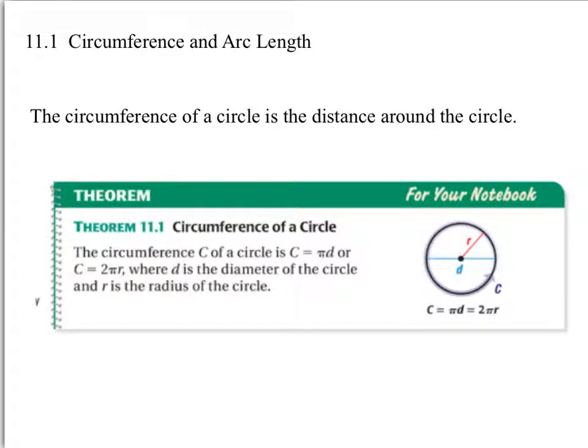New chapter, new section. We're doing circumference and arc length. Circumference should not be new to us — I know you've experienced circumference in the past, but arc length is new. The circumference of a circle is the distance around the circle. Sort of like perimeter is the distance around a shape, the circumference is the distance around a specific circle.